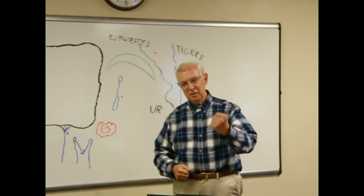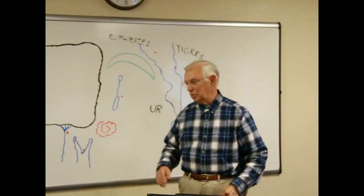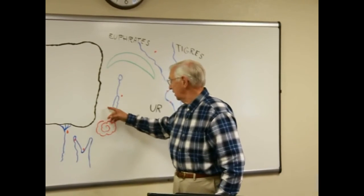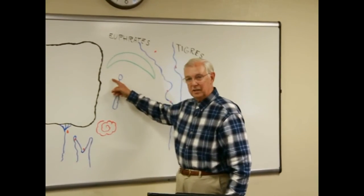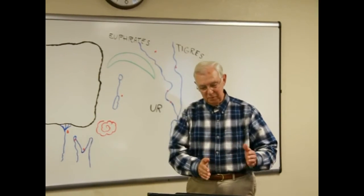God raised up another deliverer named Joshua. They crossed the Jordan River, conquered Jericho, and they went south and north, and they conquered the land in seven years, and then they divided the land among the twelve tribes of Israel.